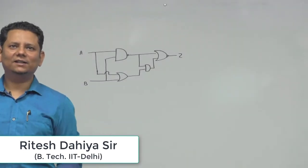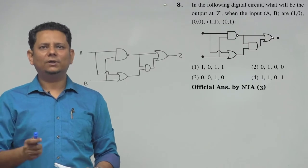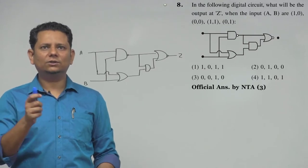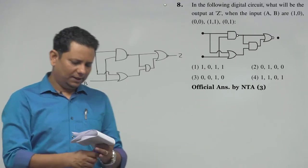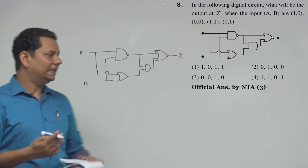Next question says in the following digital circuit, what will be the output at Z when the inputs A, B are 1,0, 0,0, 1,1, or 0,1. Now, here we go reverse engineering. How to solve this problem - I will teach you the whole way.